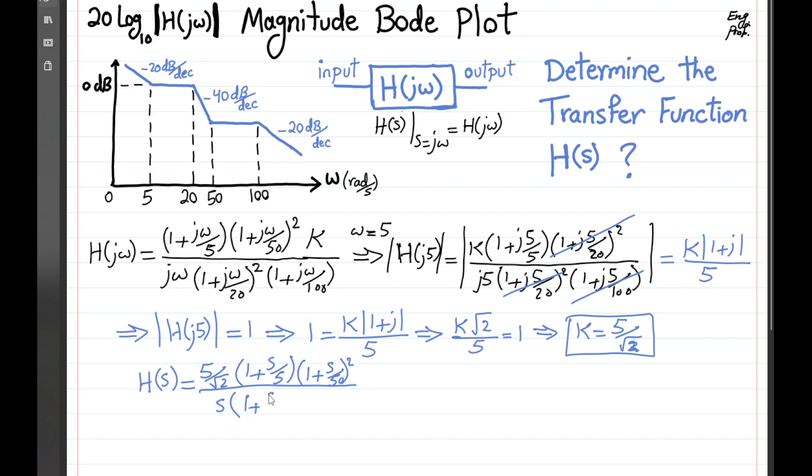and 1 plus s over 100. This is the transfer function of the LTI system for this Bode magnitude plot.